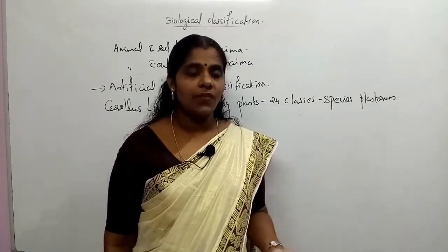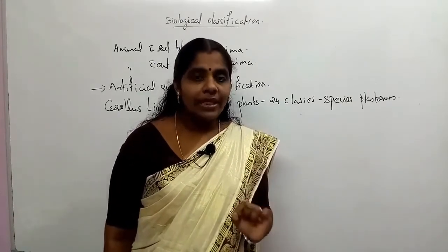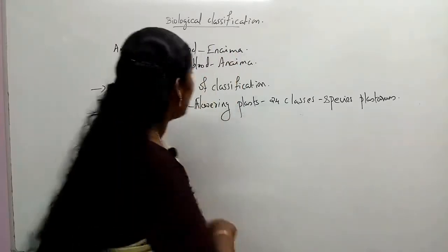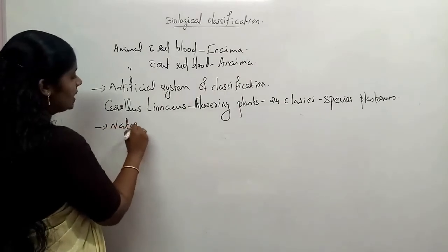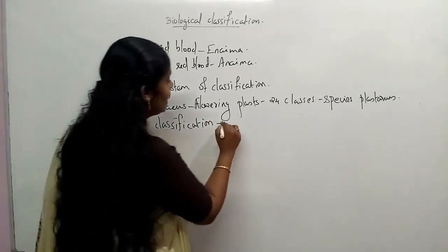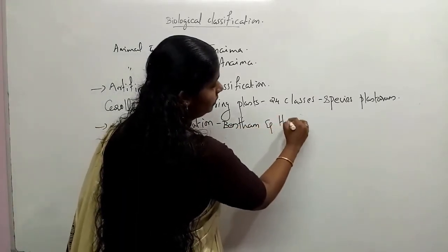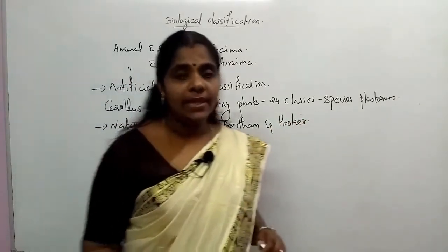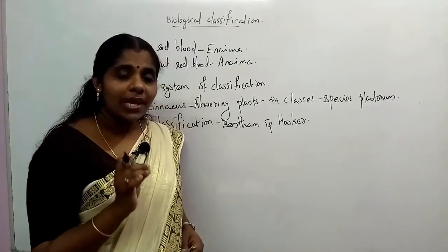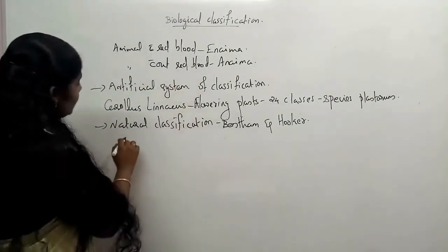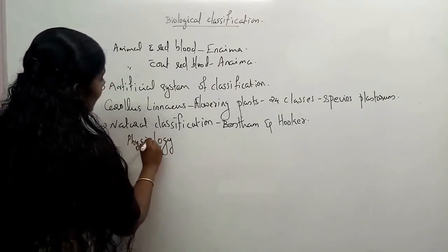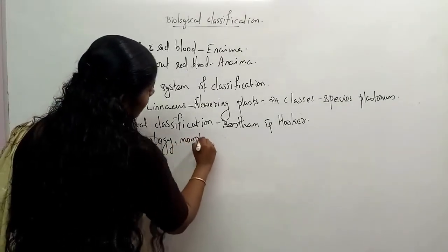The next level of classification was introduced by the scientists Bentham and Hooker. They introduced natural classification, in which many characteristic features were considered. The characteristics features include physiological characters, morphological characters, and anatomical characters.